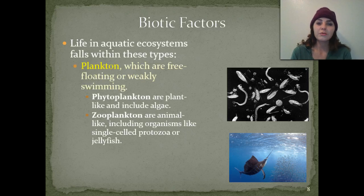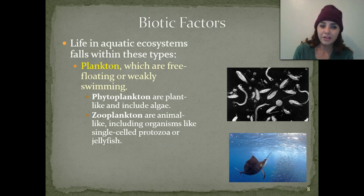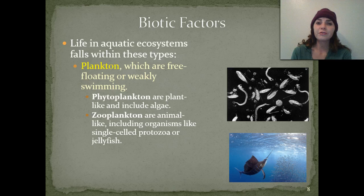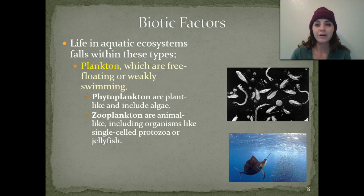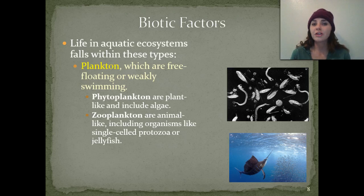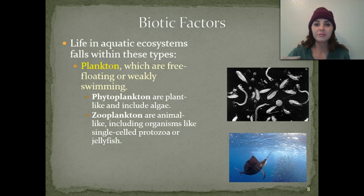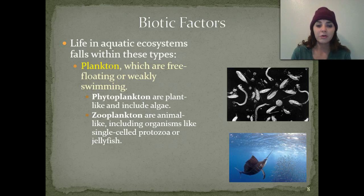Life in aquatic ecosystems falls within these types. In marine ecosystems, we have plankton — these are free-floating or weakly swimming organisms that kind of have to go with the flow. If there's a strong current, they're going to go with it. We have two main types: phytoplankton — 'phyto' means plant — so these are plant-based planktons including algae. Then we have zooplankton — 'zoo' means animal — free-floating organisms that include single-celled protozoa as well as jellyfish.